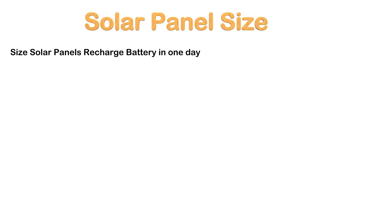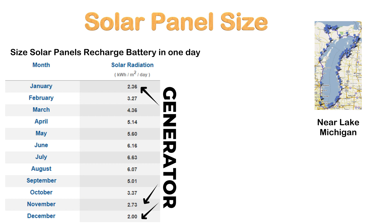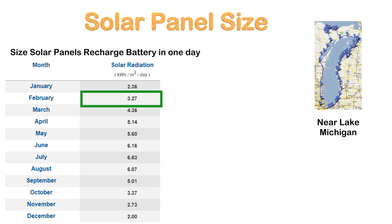In step 3, we need to size the solar panels needed to charge the battery in one day. We must figure out the sun hours for your location. For example, near Lake Michigan in Lansing, Michigan, a sun-hour chart shows that November, December, and January have the fewest sun hours. Sizing for those months would require more solar panels and increase cost. A generator can supplement energy during those low-sun-hour months. We'll use February, calculated at 3 sun hours, as our baseline.